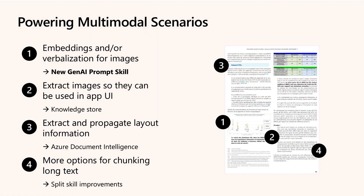To tackle multimodal challenges, new capabilities leverage generative AI to verbalize images during ingestion, translating diagrams into descriptive text and avoiding embedding confusion. A knowledge store extracts images separately so they can be displayed alongside text answers in applications. Layout details like tables and charts are preserved through advanced document intelligence, enhancing retrieval quality and groundedness. A demo built a multimodal Azure search index from PDFs using GPT-4 for verbalization and Azure Document Intelligence for layout extraction, with an interactive app available on GitHub.